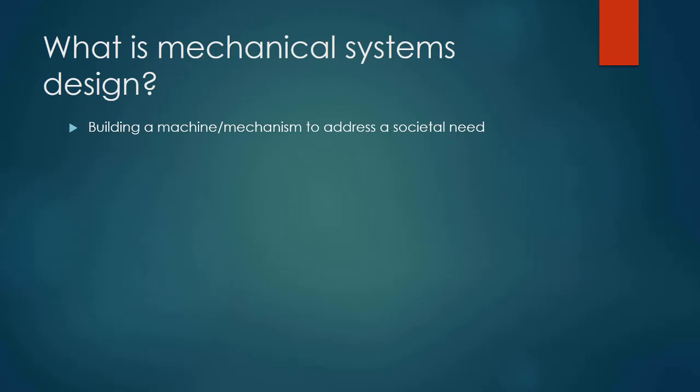We build things to do things, and I divide these into two categories: essential machines and non-essential machines. Power generators are clearly essential to the functioning of our modern society — electrical generators, turbines, engines, motors — all sorts of things that enable the convenience features of our modern society.